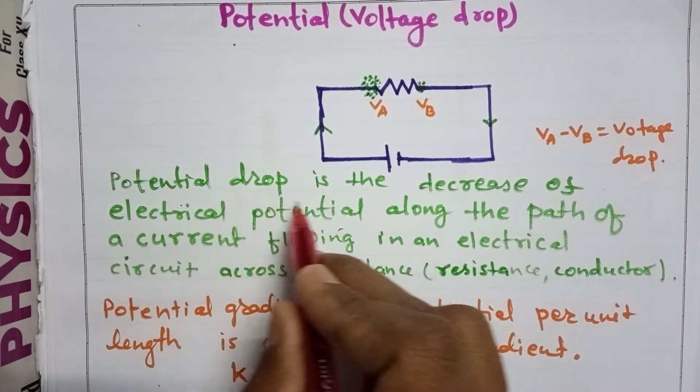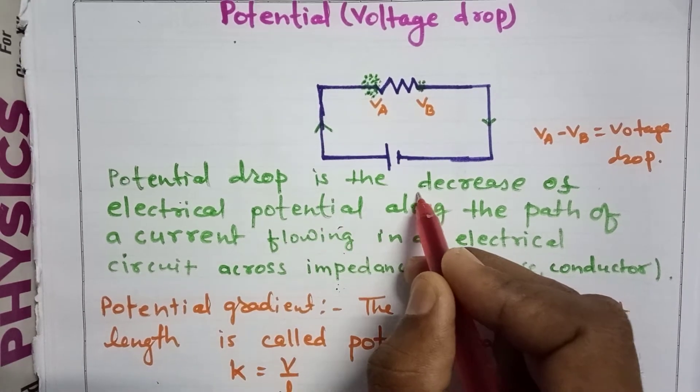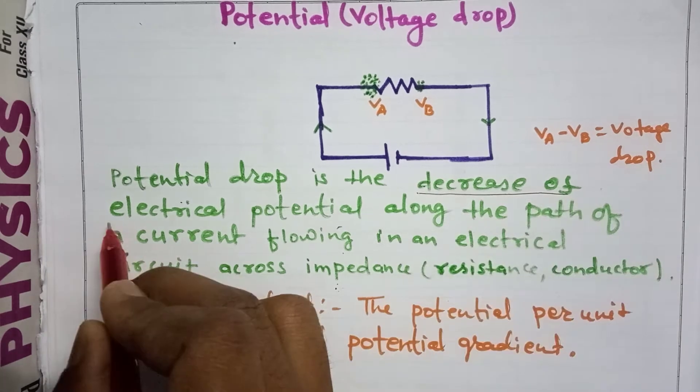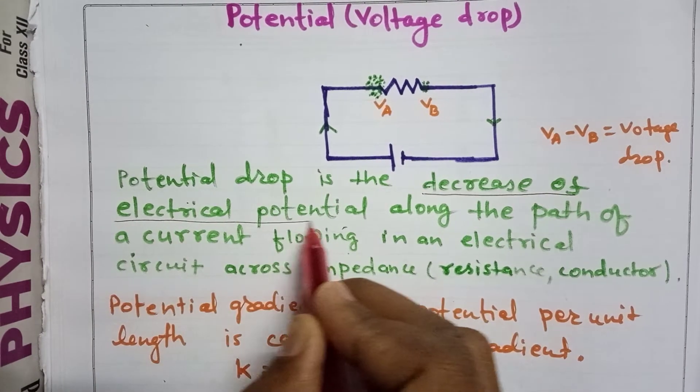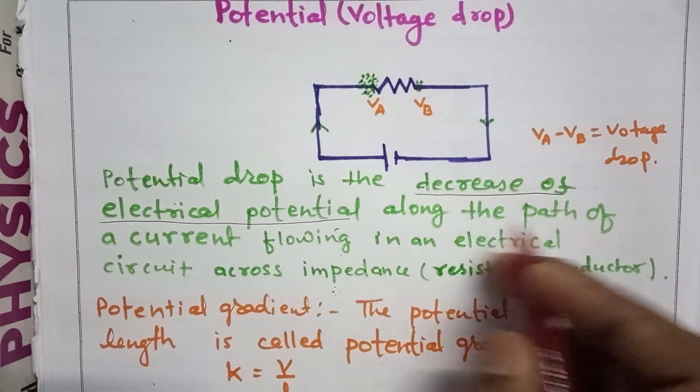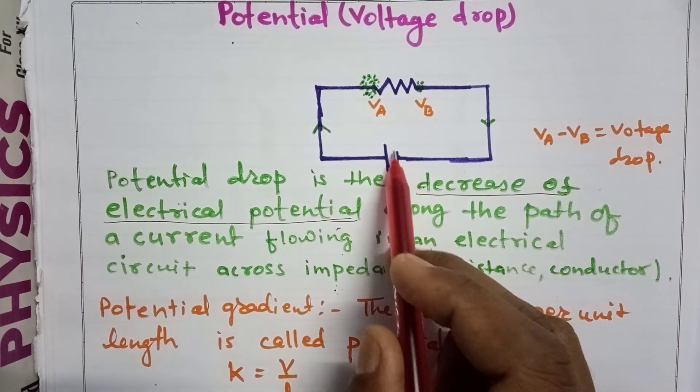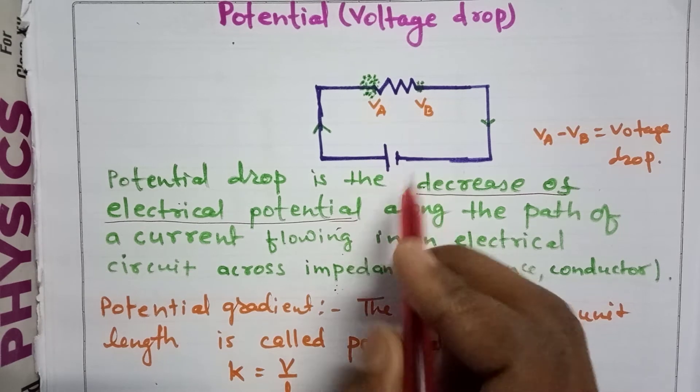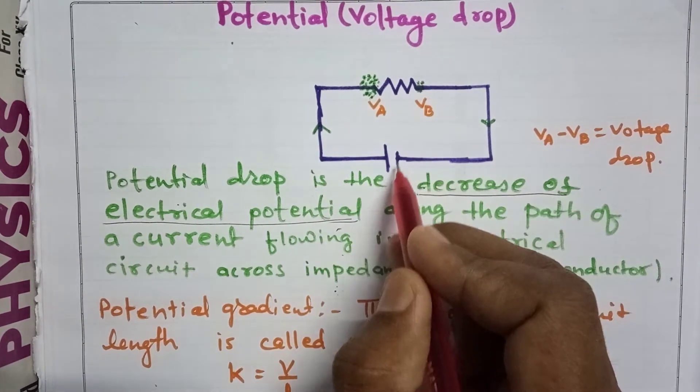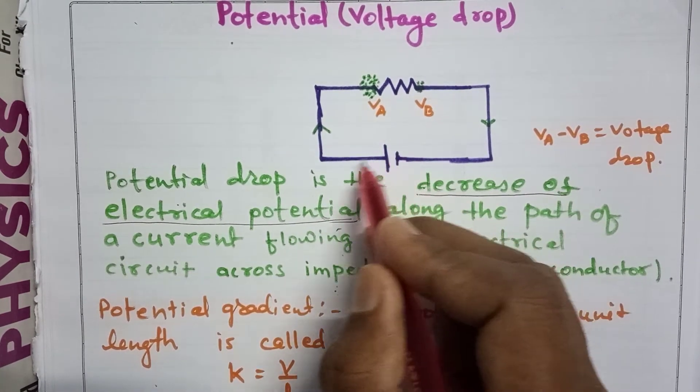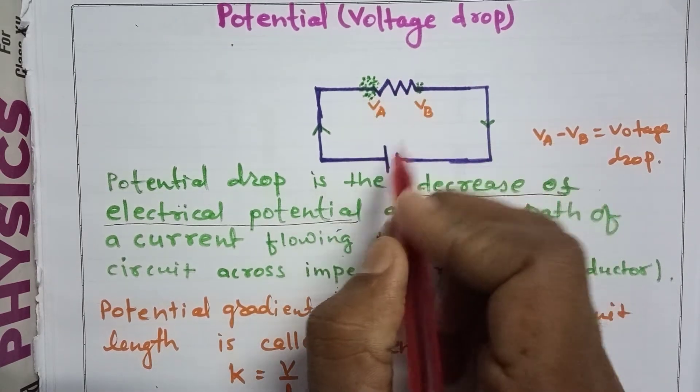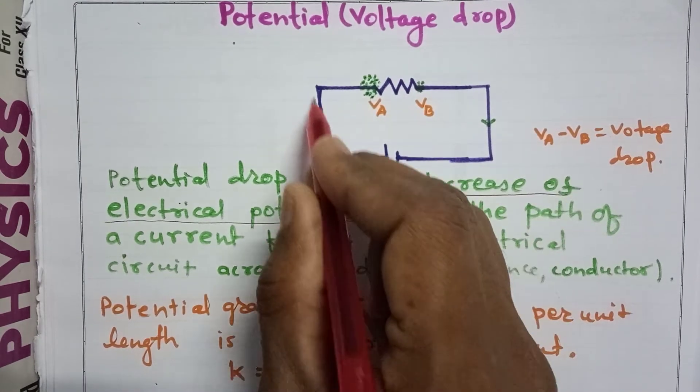Potential drop is the decrease of electrical potential along the path of current. Let me explain with a circuit example. Suppose we have a power source and this is a resistance. Positive charges start to flow in this direction from the positive terminal of the battery.